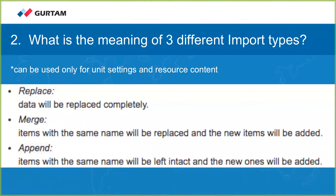The 'merge' option means items with the same name will be replaced and new items will be added. For example, if you have an RPM sensor in the demo unit and in all units of the same type, and you discover the wrong parameter or sensor type was set, you fix it for the demo unit, then use import-export to update all other sensors with the same name. Merge works perfectly here because the sensors won't be duplicated — the same RPM sensor will just have its type fixed across all other units.